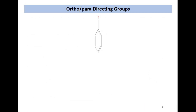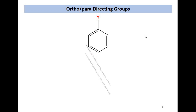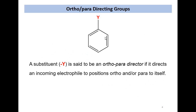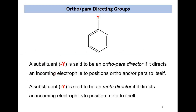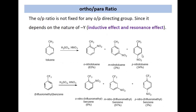We can assign the term ortho-para directing or meta directing according to the nature of group Y. If Y makes benzene more reactive at the ortho positions and the para position, then it is called an activating, ortho-para directing group. Deactivating groups make those positions less reactive and leave only the meta position available for substituent attachment. The Y group is a meta director if it directs the incoming electrophile to the meta position, making the benzene ring less reactive. Here are some examples from the nitration of these activating and deactivating groups.